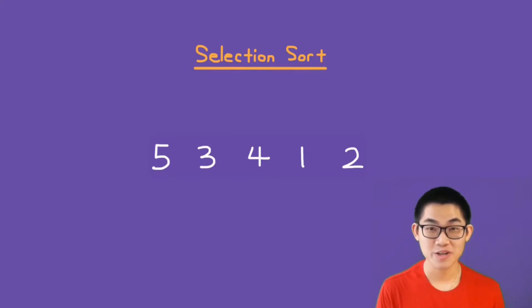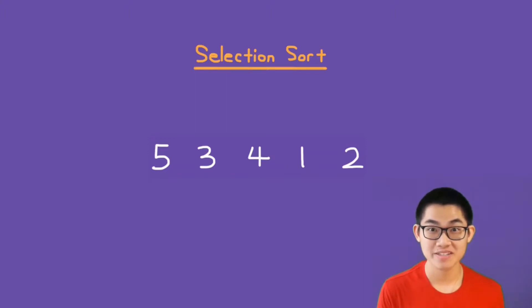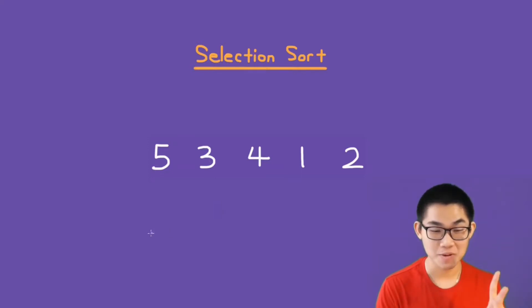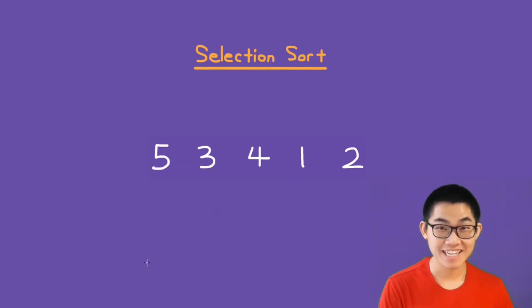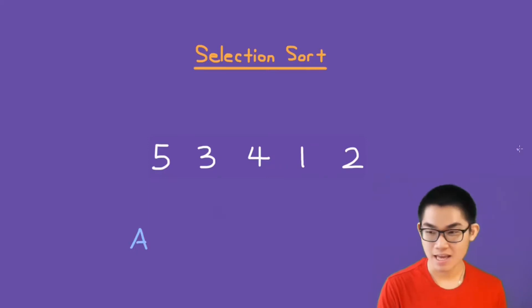In this video, we're going to cover selection sort, how it works, and then I'm going to show you the code for selection sort. The idea behind selection sort is that there are two people — A and B.